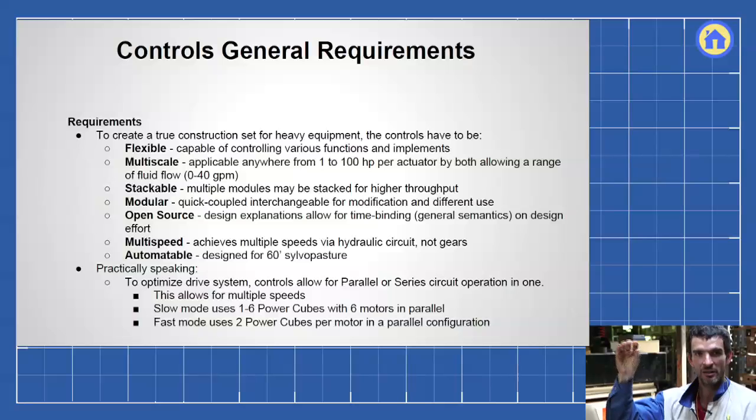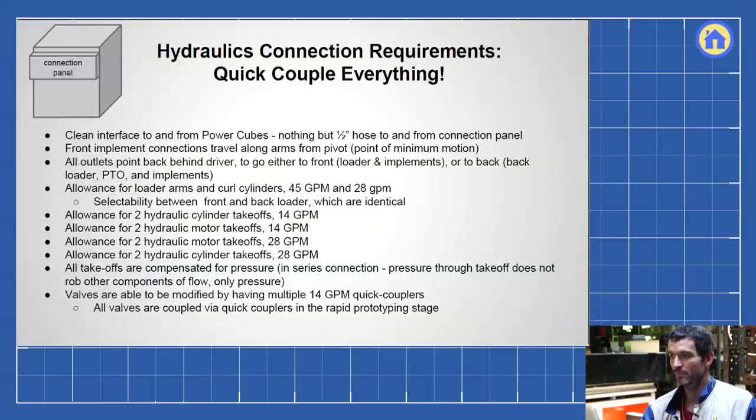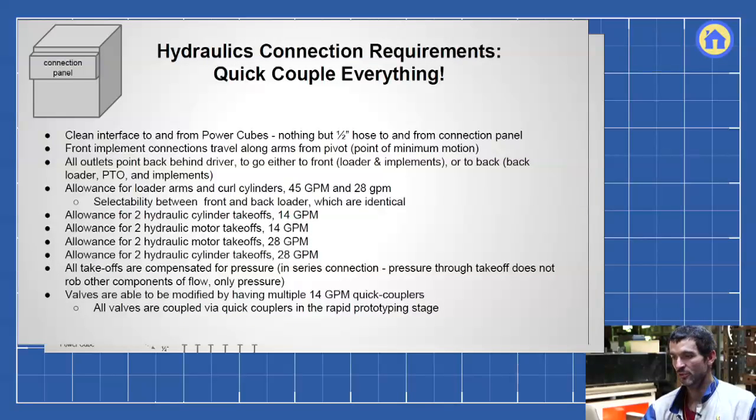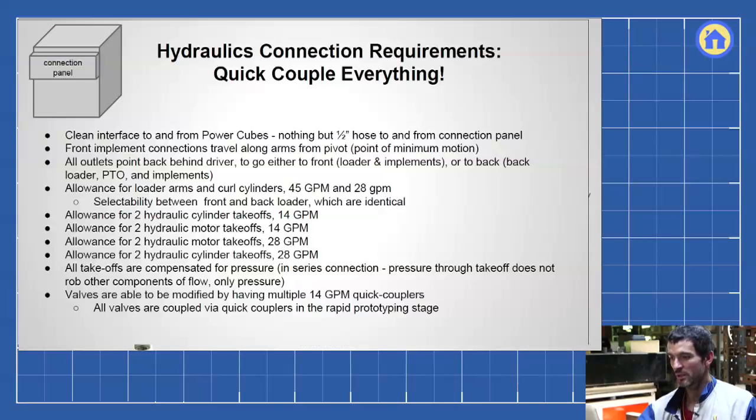There's a header that allows you to plug in as many power cubes as you like. There's another panel that has all the power going to the wheel motors through individual lines, so we're keeping everything clean while keeping it simple. Quick couplers are used throughout, so basically each quick coupler gets us 12 or 14 gallons per minute. Each power cube is about 14 gallons per minute, so a quick coupler pair is enough for one power cube.